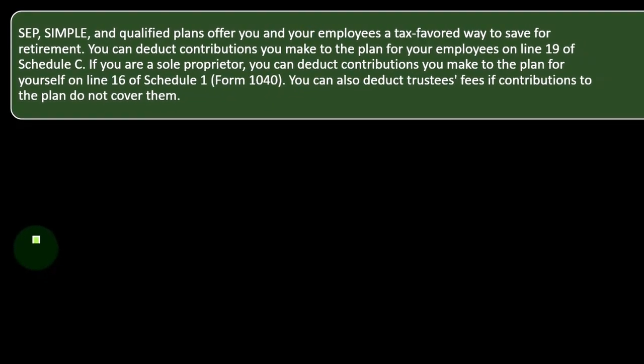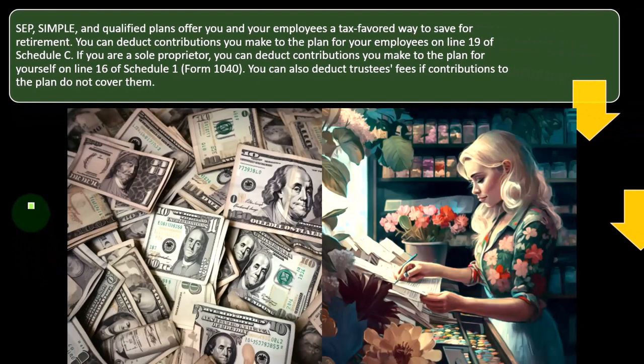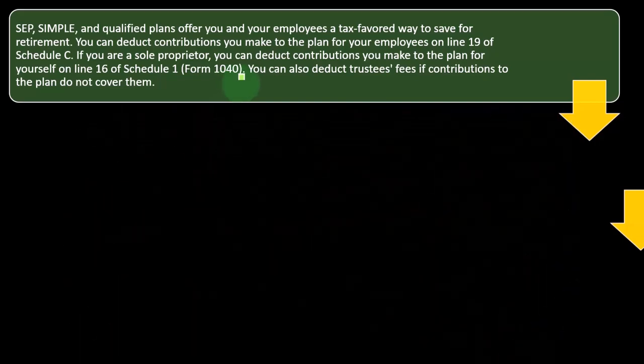The amount put away for employees is part of the business benefits — a normal, ordinary, necessary deduction on Schedule C. If you are a sole proprietor, you can deduct contributions you make to the plan for yourself on line 16 of Schedule 1, Form 1040. So you end up with a similar situation.